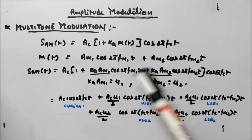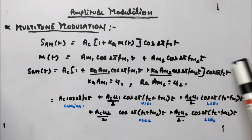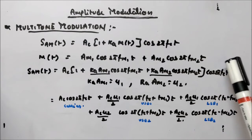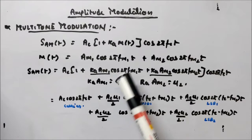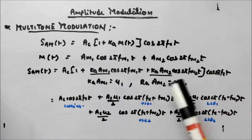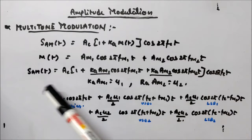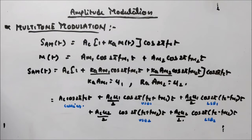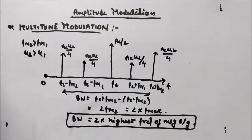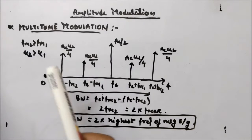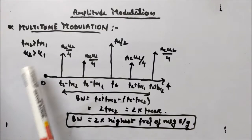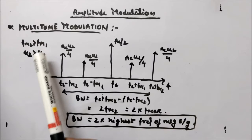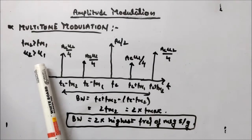It's not that you can only have two tones — you can have other terms as well. Right now I am showing it with two frequency components, and accordingly the expression will expand. Now let's look at the spectrum of multi-tone modulation. Assume fm2 is greater than fm1 and mu2 is greater than mu1, which will make it easier to show the spectrum.